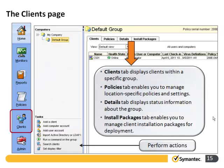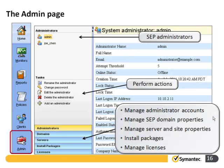We have the Clients page, where we can see the default hierarchy with My Company and the default group displayed. On the right-hand side, under the default group area, we see information highlighted from the current default group. When managing clients, make sure you've selected the correct group structure to display information about policies, details, and installed packages for that group. On the Admin page, we can see administrators — admin and Joe Chen currently. We can see the tasks we can perform on a user and tabs for administrators, domains, servers, install packages, and licenses.